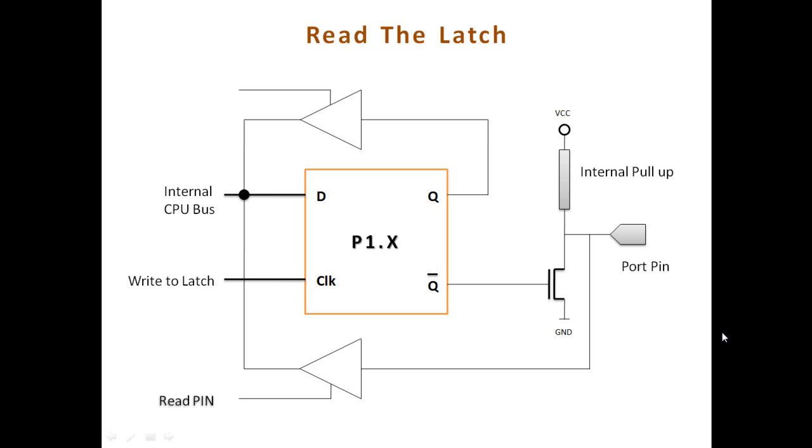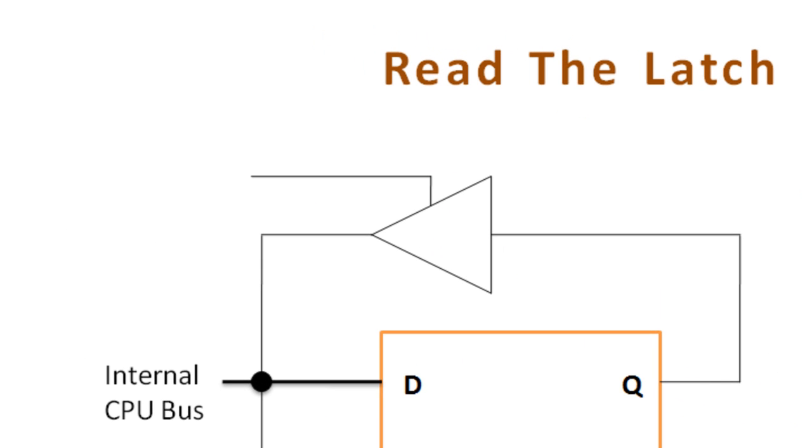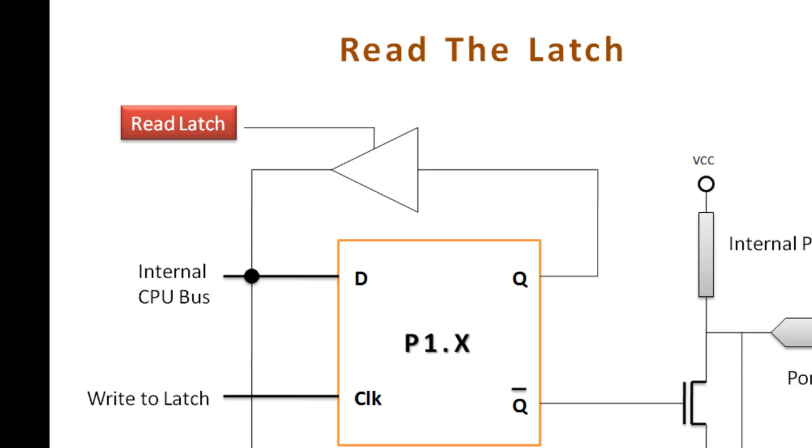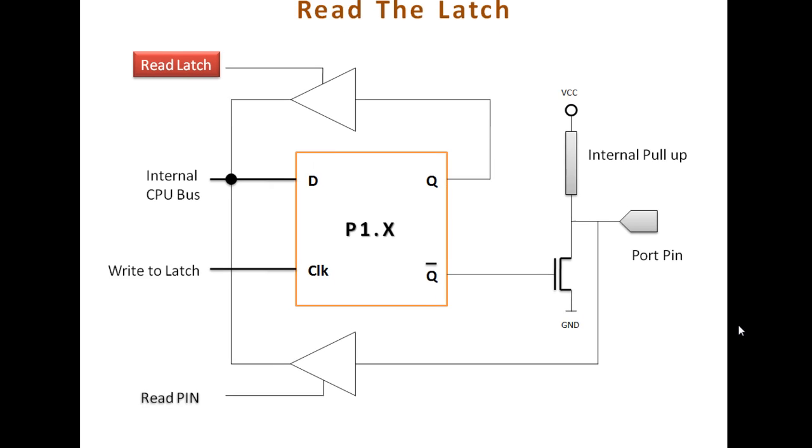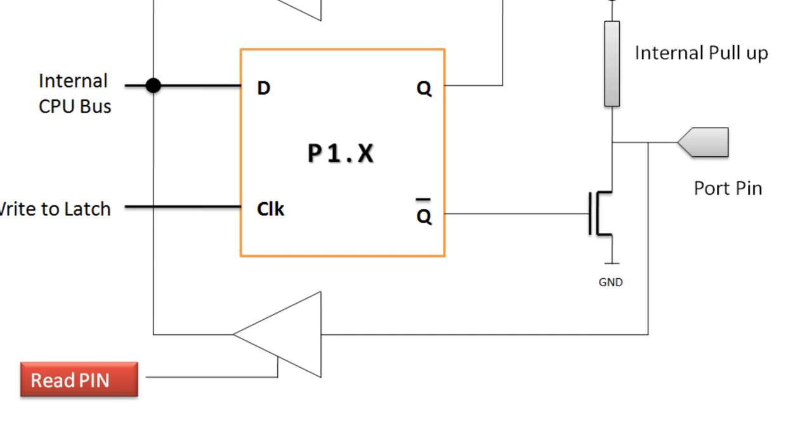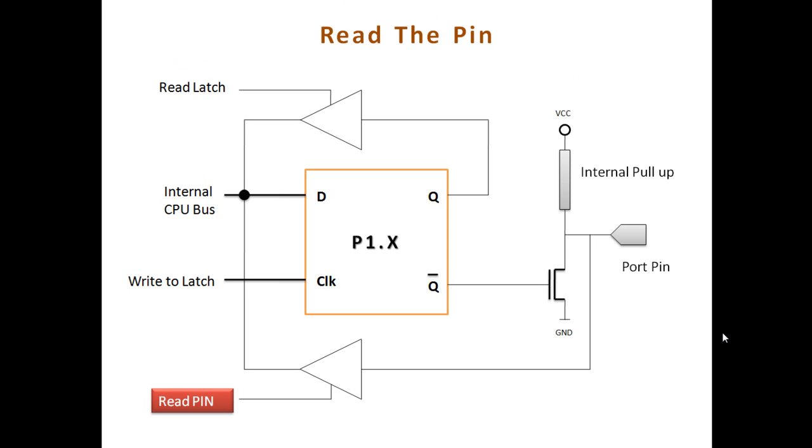The read operation of 8051 is a very typical operation where you can either read the latch or read the port pin. This is an interesting feature of 8051. If we read the latch, the tri-state buffer related to the latch will put the data on the internal CPU bus. If we read the pin, the tri-state buffer will put the pin data on the CPU internal bus. This provides a very interesting programming technique in 8051.